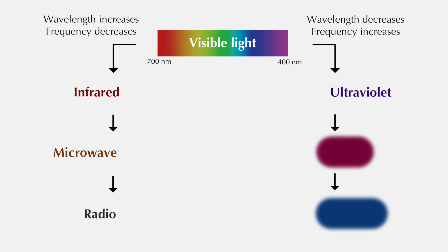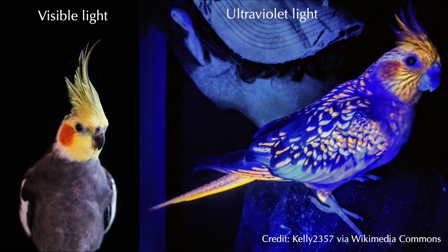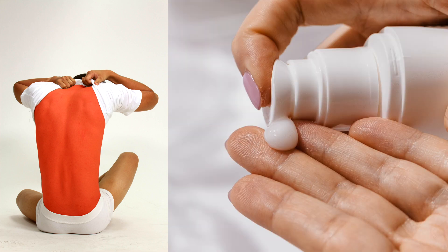First, we encounter ultraviolet, which exists beyond violet light. It is invisible to most humans, but can be seen by some birds and insects. Because it is more energetic than visible light, it can actually cause damage to living cells.